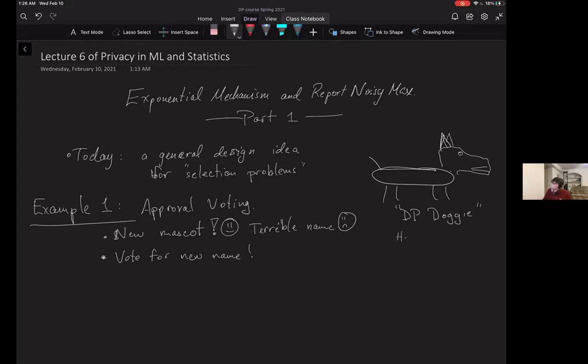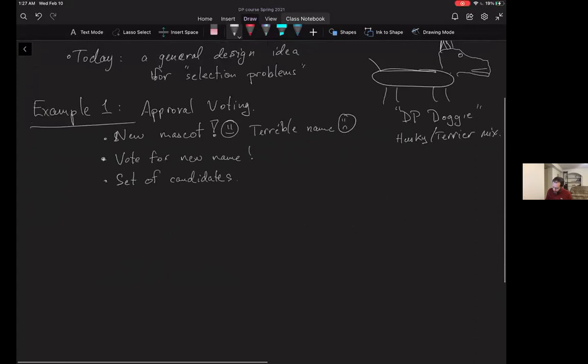The mascot, of course, is a Husky Terrier mix because this course is joint between UW and Northeastern. We want to vote for a new name. So we've got a set of candidates. In the scheme called approval voting, each person submits a list of names they find acceptable.